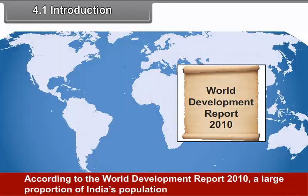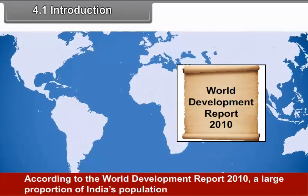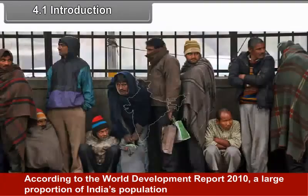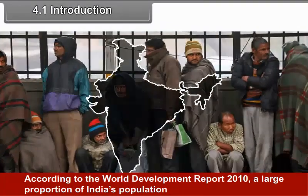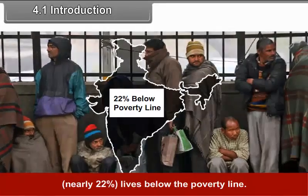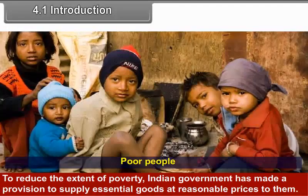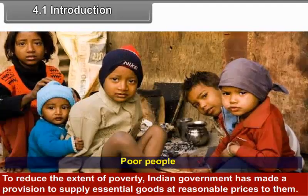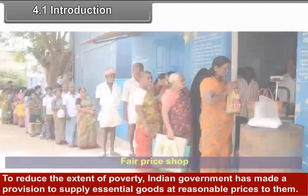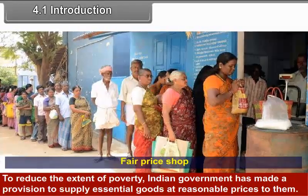4.1 Introduction. According to the World Development Report 2010, a large proportion of India's population lives below the poverty line. To reduce the extent of poverty, the Indian government has made a provision to supply essential goods at a reasonable price to them.